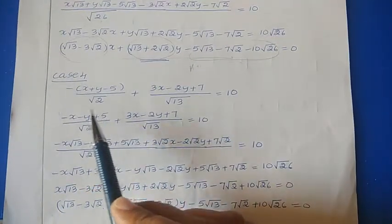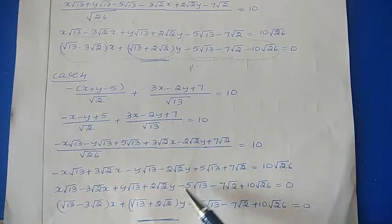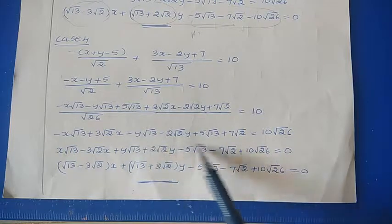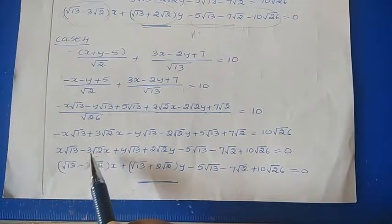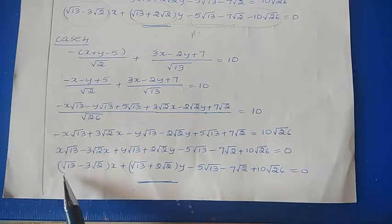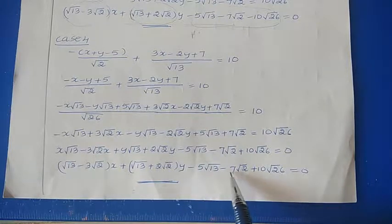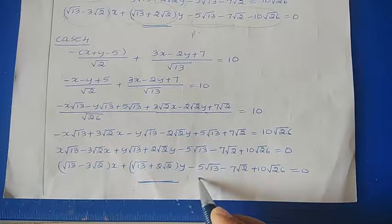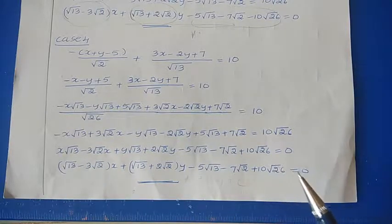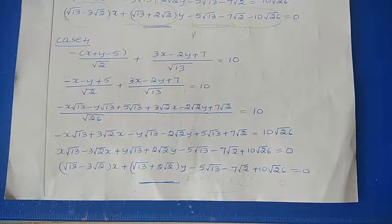Case 4: taking the first value as minus and the second as plus. Following the same method — take LCM, multiply, and group x and y terms. The final answer is (√13-3√2)x + (√13+2√2)y - 5√13 - 7√2 + 10√26 = 0. This is also in the form AX+BY+C=0. We have considered all 4 cases and for each, we get a straight line equation, so P must move on a line.